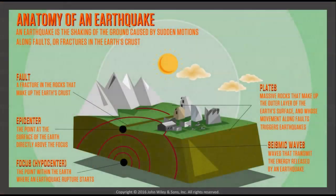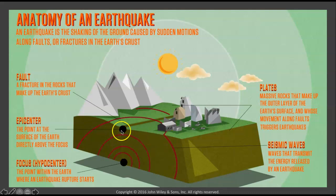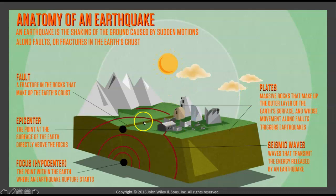Here's the anatomy of an earthquake. We have a fault, which is the fracture in the rocks that make up the Earth's crust. Here are two plates sliding against each other, and when that slide finally happens, this energy is released. The epicenter is the point at the surface directly above the focus, or hypocenter, which is the point within the Earth where the earthquake rupture starts. The plates are massive rocks that make up the outer layer of the Earth's surface, and their movements along the faults trigger the earthquakes. That energy is released in seismic waves, and a lot of damage can happen.